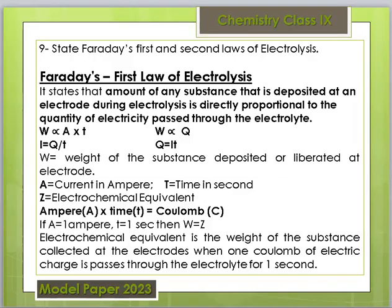Question number 9 is: State Faraday's 1st and 2nd Law of Electrolysis. We have to state the definition and tell the statement, then explain it a little bit. What is the first law of electrolysis? It states that the amount of any substance that is deposited at an electrode during electrolysis is directly proportional to the quantity of electricity passed through the electrolyte.